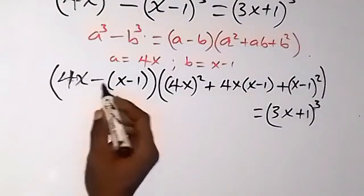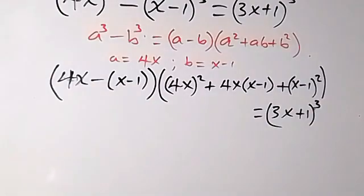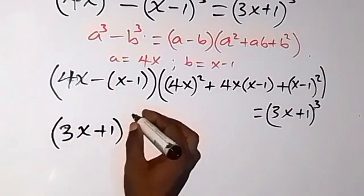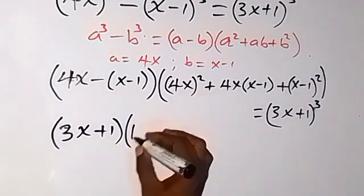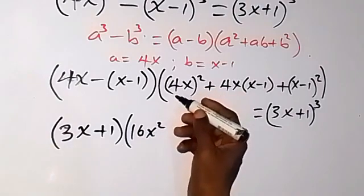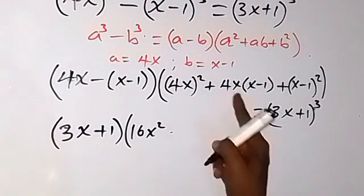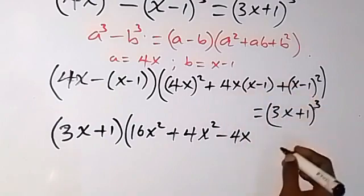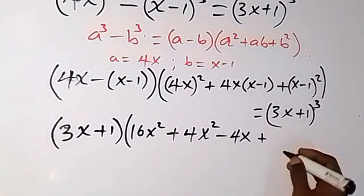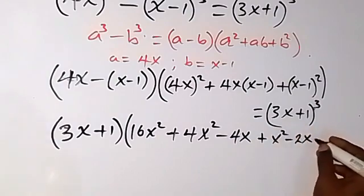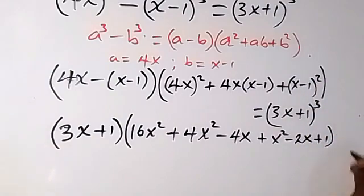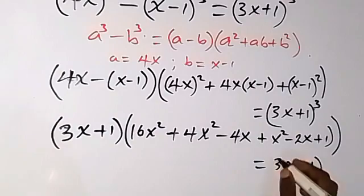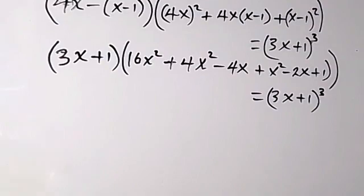Simplifying the first bracket: 4x minus x plus 1 gives 3x plus 1. Then expanding: (4x)² is 16x², plus 4x times x minus 4x times 1 gives plus 4x minus 4x, and opening (x minus 1)² gives x² minus 2x plus 1. Collecting like terms: 16x² plus 4x² plus x² gives 21x², then minus 4x minus 3x gives minus 6x, plus 1. This equals (3x plus 1) raised to power 3.